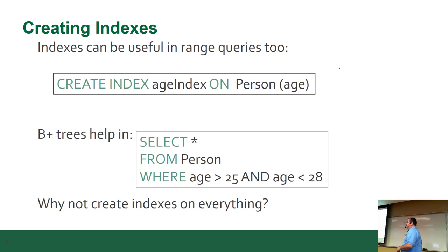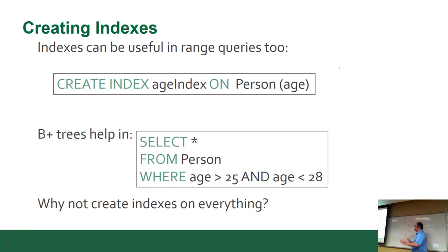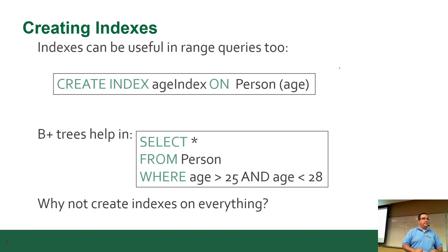If your WHERE clause has two columns and one of those columns is in a single-column index, it'll use that one. If there are two indexes, one for each column, it'll try to guess which gives the best benefit. Some servers can use more than one index — Postgres is able to use more than one index at once. It'll use index one to reduce the set, then index two to reduce it further, and then merge the results. But not all servers can do that. The disadvantages are: space, IO, and optimizer confusion.